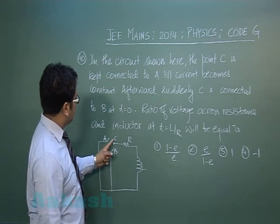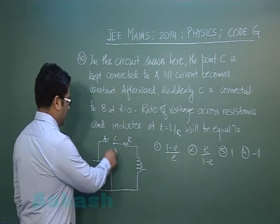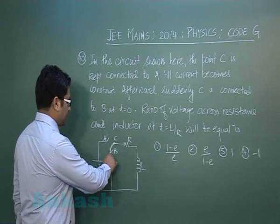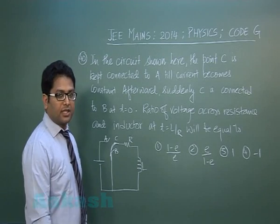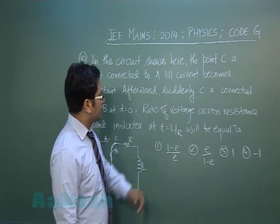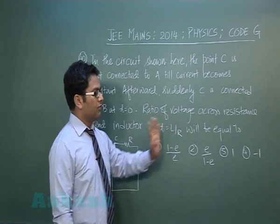Afterward, suddenly C is connected to B at T equals 0. Now it becomes an RL discharging circuit. The question asks for the ratio of voltage across the resistance and inductor at T equals L by R.